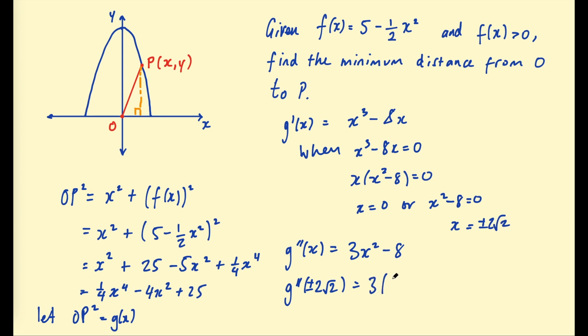This will be 3 times plus or minus 2 root 2 all squared minus 8, which gives us, that's 3 times 8 minus 8, which is 16. This is greater than 0. Remember what that means? That means these are minimums of this function. So therefore we could say we have minimums when x equals plus or minus 2 root 2. Now we don't have to worry about finding the nature of the x equals 0 point because we know this is a positive quartic, which looks something like this. And if we have two minimums already, we know that third one will be a maximum.